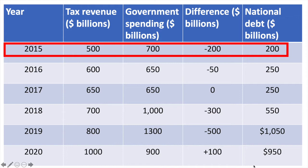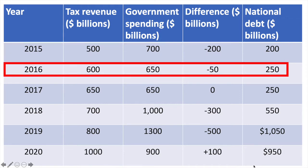When they overspend, it will be funded through borrowing. In 2016 they collected $600 billion in tax revenue and spent $650 billion. This year they ran a smaller budget deficit of $50 billion, which is added onto the existing national debt of $200 billion. At the end of 2016 the national debt would be $250 billion.